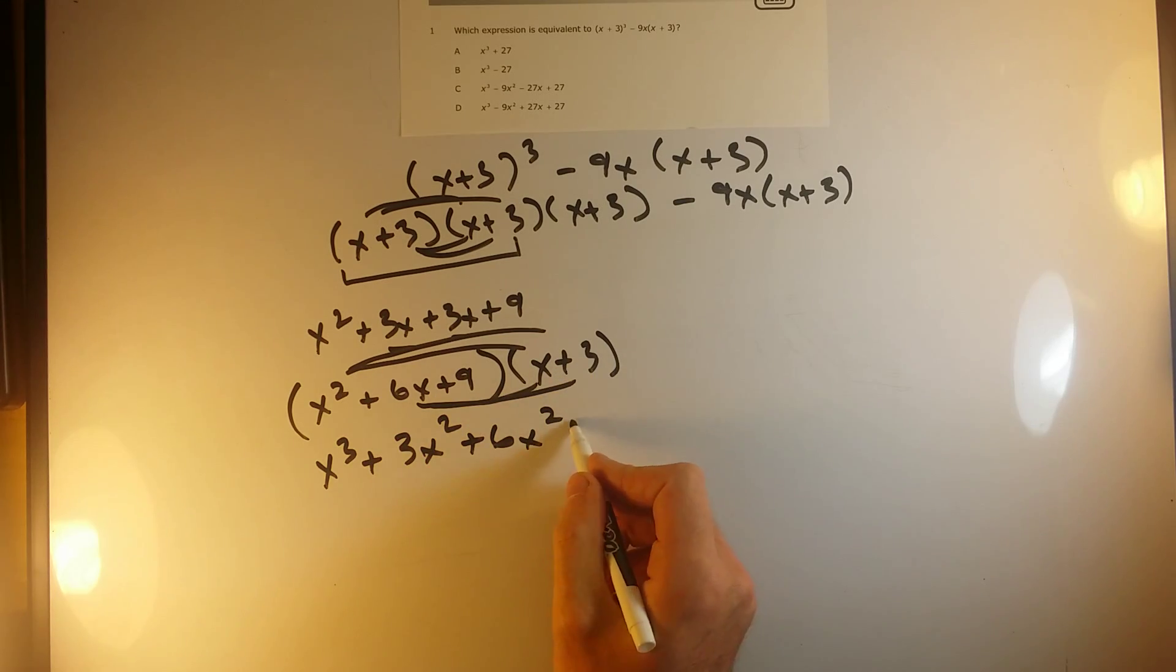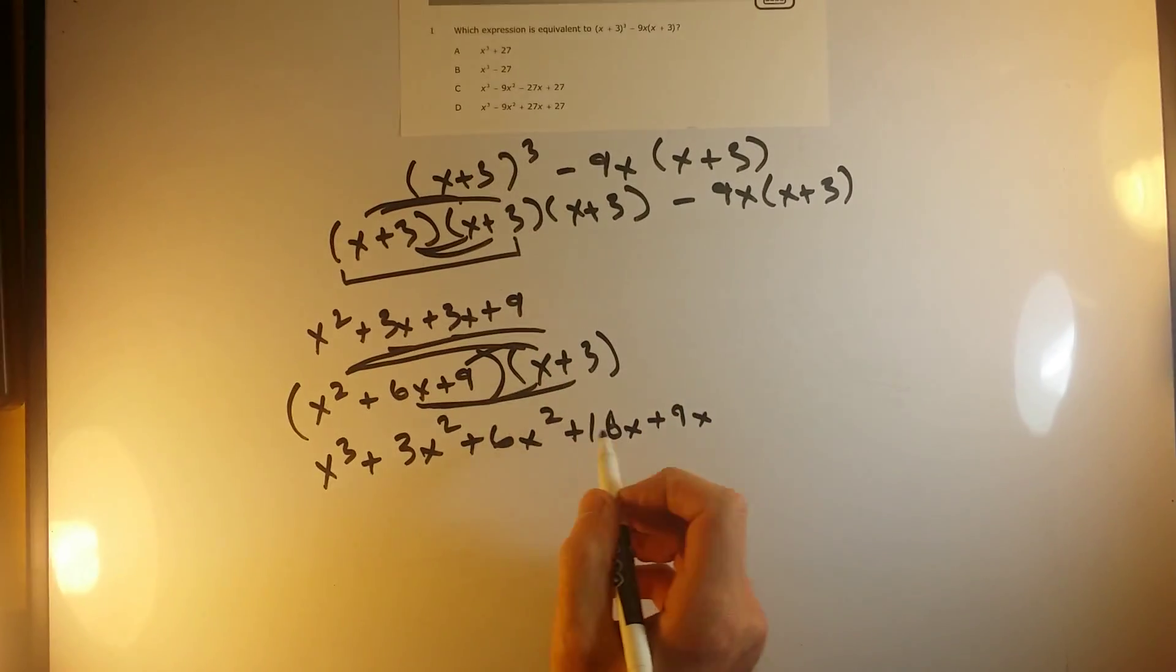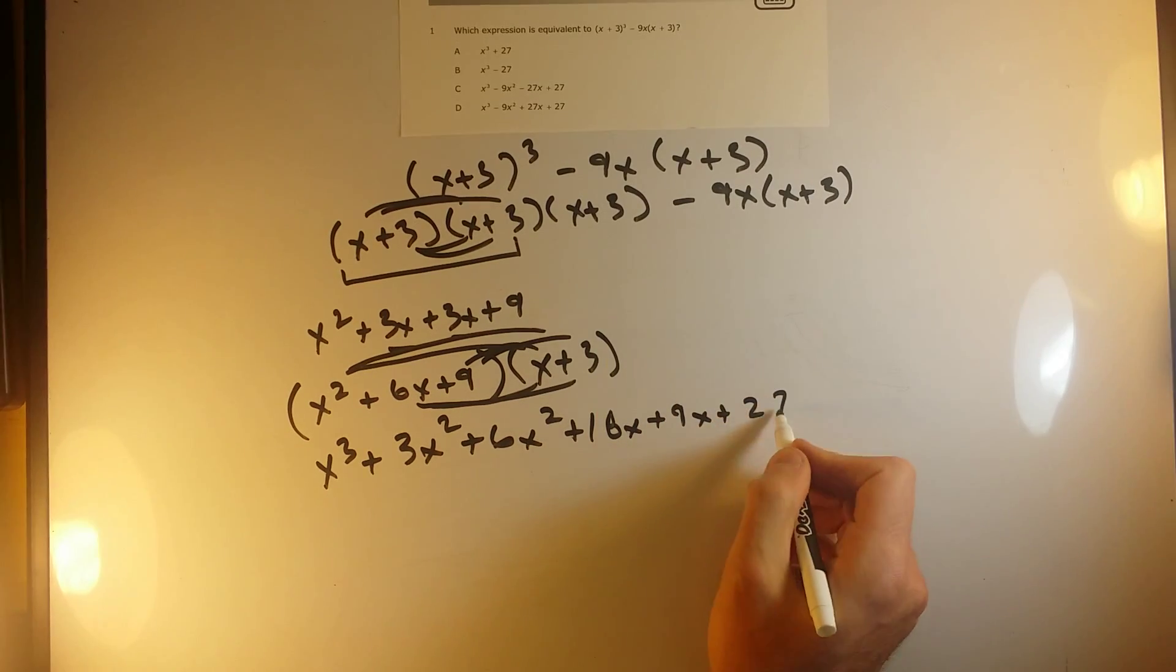6x times 3 gives me 18x. Okay, so the last one then. 9 times x gives me 9x. 9 times 3 gives me 27.